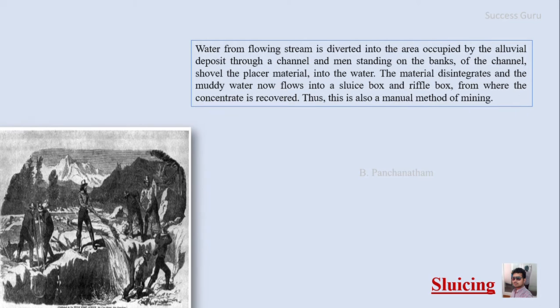The next method is sluicing, where water from a flowing stream is diverted into the area of the alluvial deposit through a channel. Workers standing on the banks of the channel shovel the material into the water. The disintegrated material and muddy water flow into a sluice box and riffle box where the concentration is recovered. This is also a manual method of mining. The valuable minerals are retained in the riffle levels while the lighter, unvalued minerals pass through.